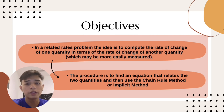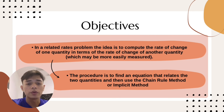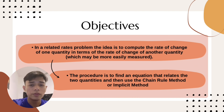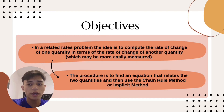In related rate problems, the idea is to compute the rate of change of one quantity in terms of the rate of change of another quantity, which may be more easily measured. The procedure is to find an equation that relates the two quantities and then use the chain rule method or implicit differentiation method.